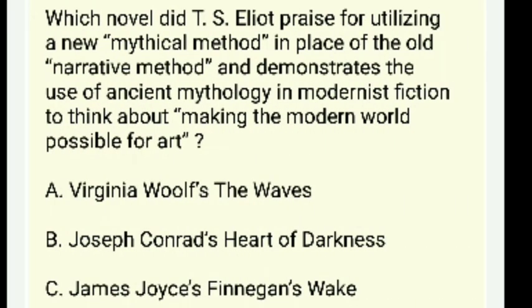Which novel did T.S. Eliot cite in modernist fiction to think about making the modern world possible for art — Virginia Woolf's The Waves, Joseph Conrad's Heart of Darkness, James Joyce's Finnegans Wake, or James Joyce's Ulysses? The answer is James Joyce's Ulysses.